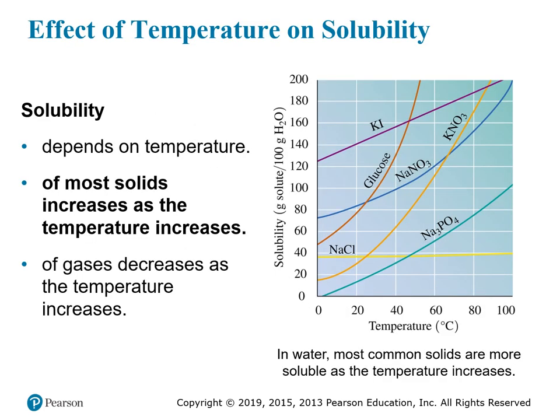Temperature can affect solubility. The solubility of most solids increases as you heat up the liquid. If you want to dissolve more salt, heat up the water and it'll dissolve a little more — table salt doesn't increase very much, but many compounds increase a lot. Glucose becomes much more soluble as temperature increases. Potassium iodide, sodium nitrate, potassium nitrate, and sodium phosphate are all ionic compounds that become much more soluble as temperature increases.